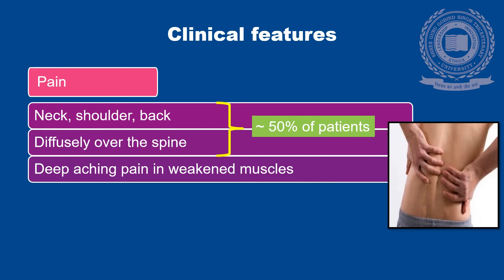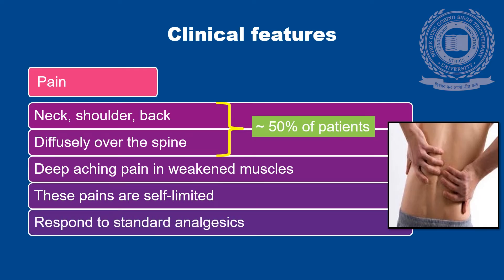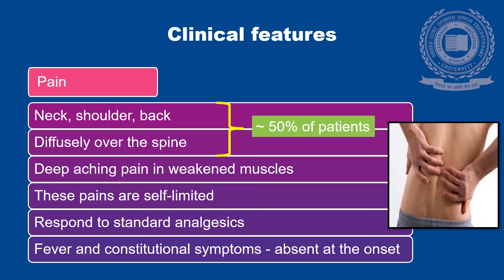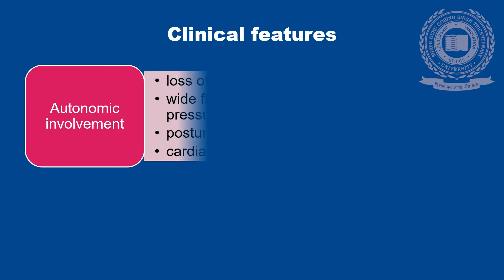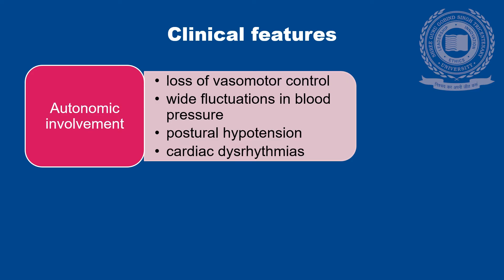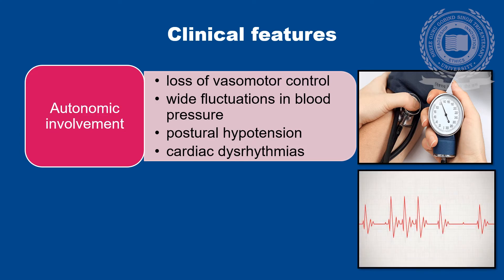Deep aching pain is also present in weakened muscles. These pains are self-limited and they respond to standard analgesics. Fever and constitutional symptoms are absent at the onset of the disease. Autonomic involvement is common and may occur even in patients whose GBS is otherwise mild. The usual manifestations are loss of vasomotor control with wide fluctuations in blood pressure, postural hypotension, and cardiac dysrhythmias. These features require close monitoring and management as they can be fatal.